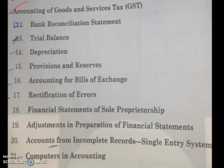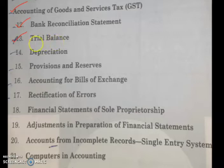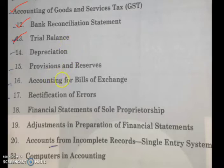Then we studied BRS and did one problem which you have to practice. Then trial balance. We saw that trial balance shows the accuracy of posting. If the trial balance agrees — that is, your debit balance and credit balance are equal — we can be sure that we are error free. But sometimes there may still be an error that we can detect by using rectification of error.